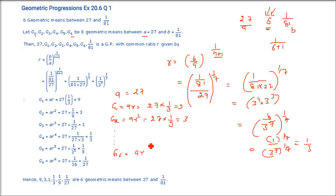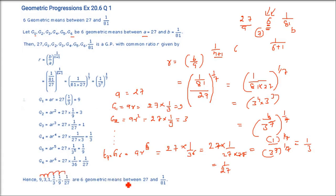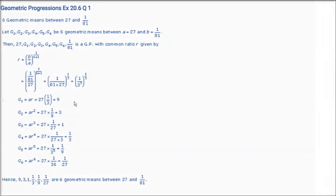Now coming to G6. G6 is T7 because A is the first term and G1 is T2. So G6 = AR⁶ = 27 × (1/3)⁶. R⁶ = 1/3⁶, so 3³ in the numerator and 3⁶ in the denominator gives 1/27. So G1 to G6 are: 9, 3, 1, 1/3, 1/9, 1/27. These are the 6 geometric means between 27 and 1/81.